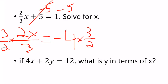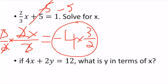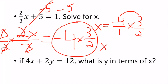I multiply by 3/2. The 3's cancel, the 2's cancel. On the right side: -4/1 times 3/2 gives -12/2, which equals -6. So x = -6 either way.